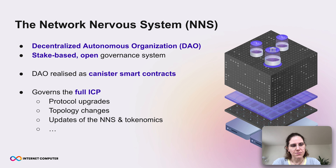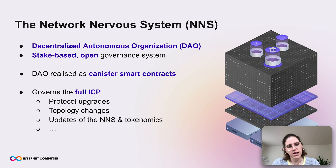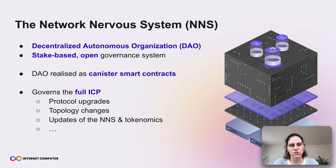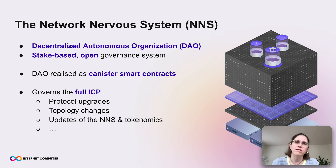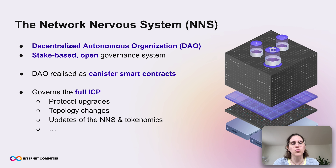As we have already mentioned, the NNS decides on protocol upgrades and on topology changes. But it also makes other decisions — for example, it decides when to change the governance itself, such as when to change the voting rules. It also makes tokenomic decisions, for example how much voting reward should be given out or how much rewards the node providers should get.